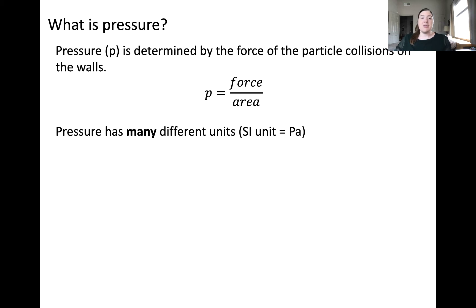Pressure can be expressed using many different units, with the SI being the Pascal. The Pascal is related to other commonly reported units of pressure, including the atmosphere or ATM, the bar, the pounds per square inch, Torr, and millimeters of mercury, among many others.